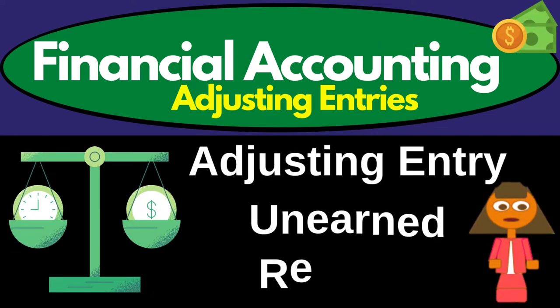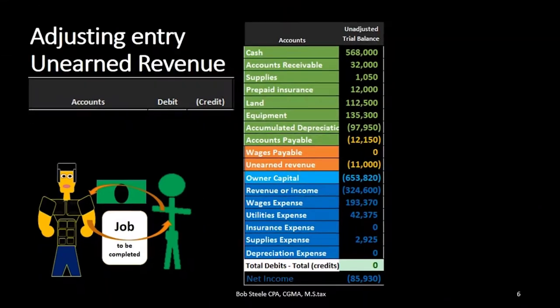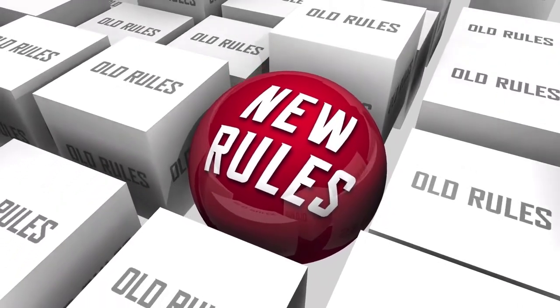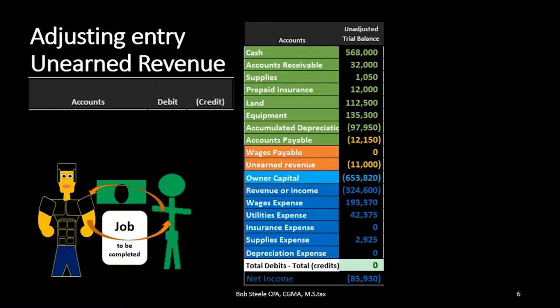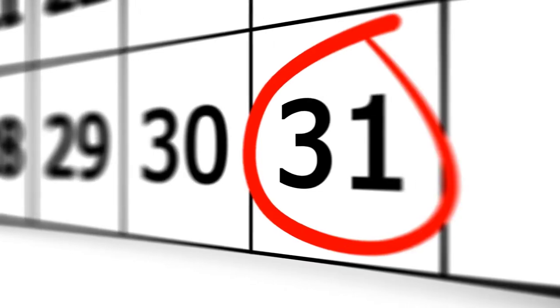Hello. In this lecture we're going to record the adjusting entry related to unearned revenue. Remember that the adjusting entry is going to be a separate process. It'll have the same rules as every journal entry, but we can add some added rules when we know that we are working with the adjusting entry process. For example, all adjusting entries will be as of the end of the time period — the end of the month or the end of the year.